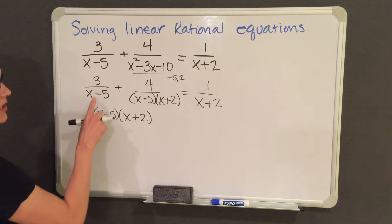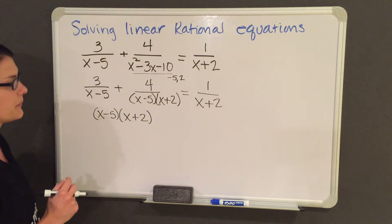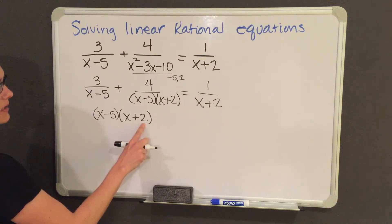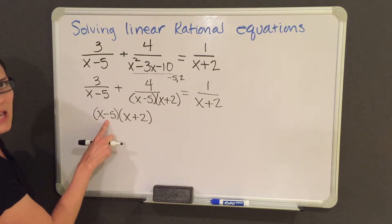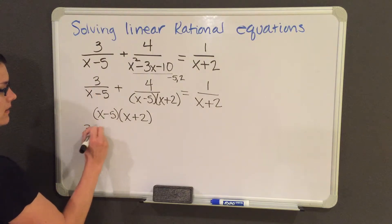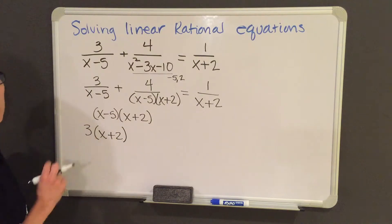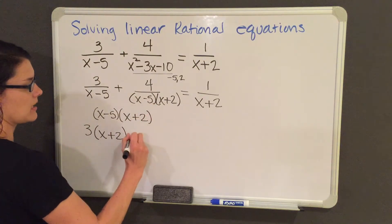What I'm going to do is multiply each term by this denominator. If I multiply my first term by this denominator, the x minus 5s will end up canceling out. So I will be left with 3 and x plus 2. This will be what remains of the first term.